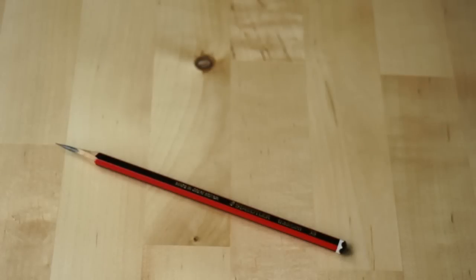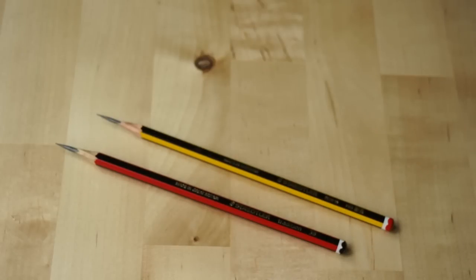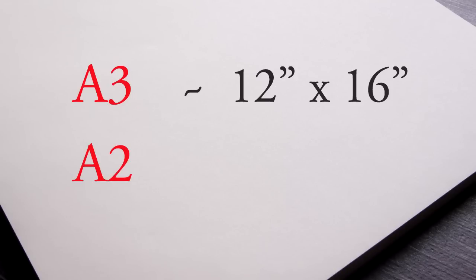For the purpose of the exercises I'm about to teach you, you will only need one or two pencils. HB or 2B are sufficient. A couple of erasers, white rubber and kneaded, and drawing paper. When it comes to drawing paper, go for a moderate price range. You don't want to overspend on high-quality paper for disposable sketches, yet going for the cheapest option is a false economy. Sizes A3 and A2, about 12 by 16 and 16 by 23 inches, are what you will need.